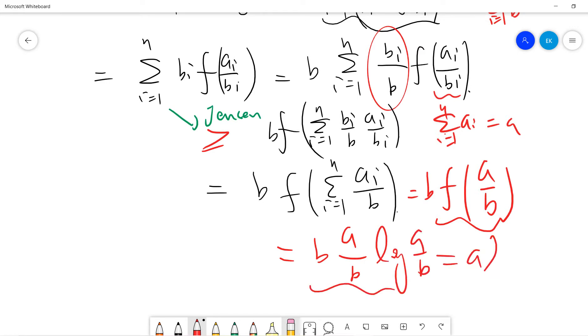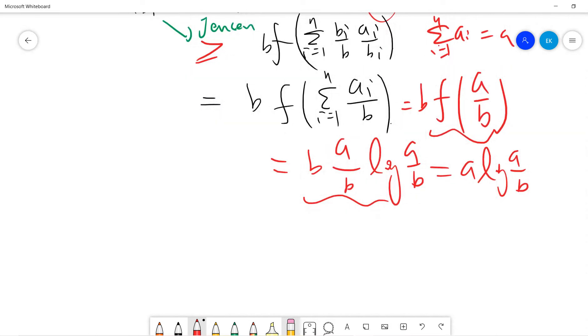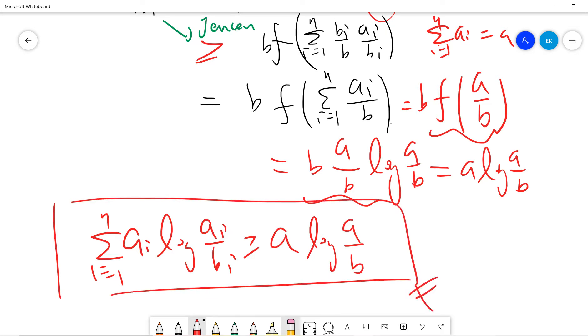So it's a log(a/b). So, in total, we have proved that sum ai log(ai/bi) from i=1 to n is greater or equal to a log(a/b).